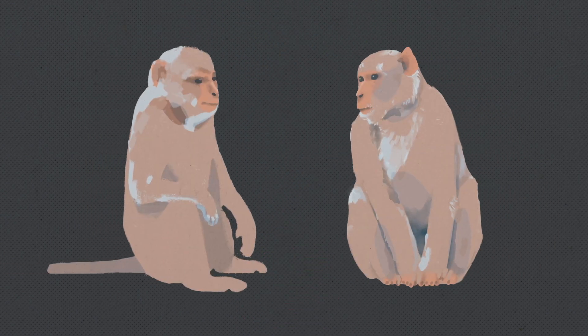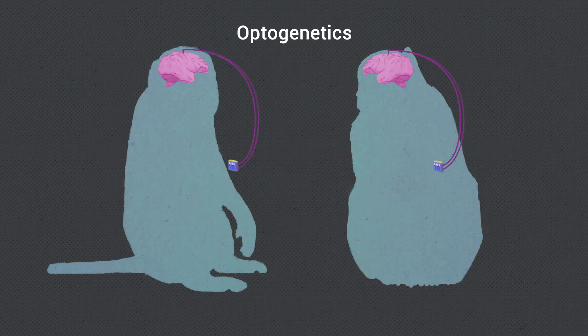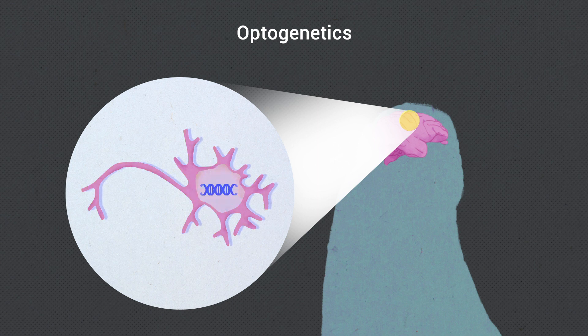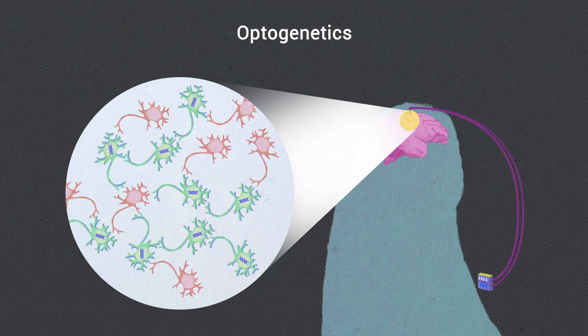In this work, we studied stimulation-induced changes in network dynamics in two macaques using a technique called optogenetics in which viruses are used to introduce genes for light-sensitive proteins into neurons. Shining light onto the brain will then activate a local group of cells that contain these proteins.